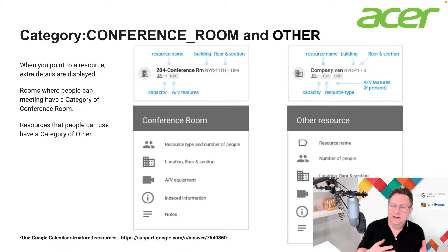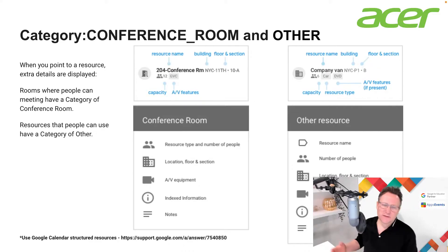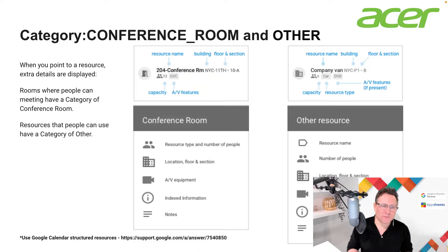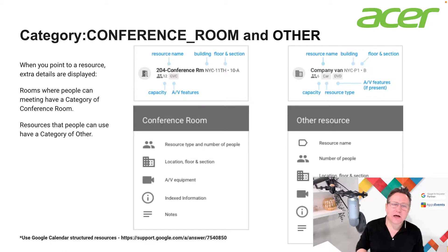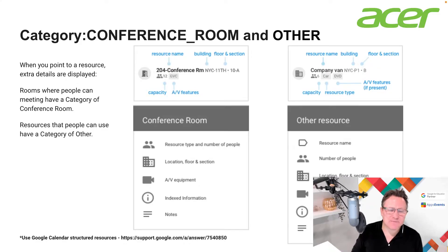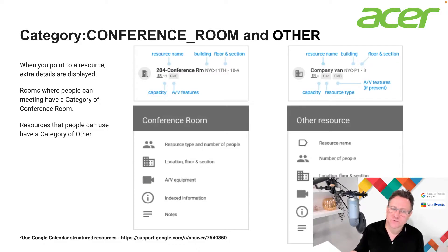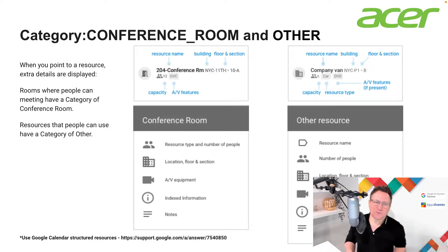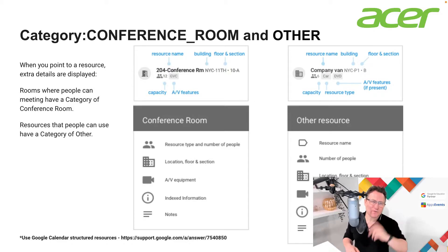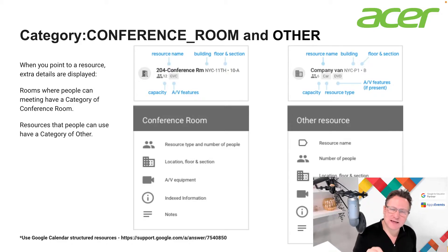Its capacity is 30 students and its category is Conference Room. Resources within Google Workspace for calendars can be of two types: a Conference Room, which is a bookable room space with the attributes of a bookable space, or Other — which covers resources like a van or a trolley of Chromebooks. Categories are set up using the API and we can use GAM to define them.